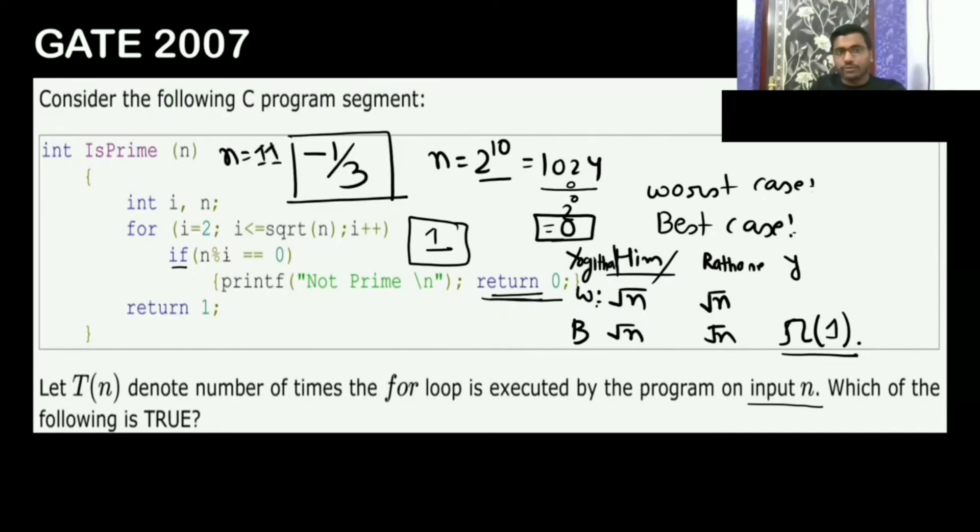It will not be divisible by 2, 3, 4, 5, 6 like this. So at that time it will run till root of N. Worst case is going to be root of N and best case is going to be, this is my answer.